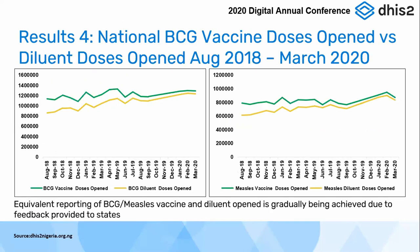The next result shows the vaccines and diluent. This is BCG vaccines and diluent: BCG vaccine, as well as measles, is given alongside the diluent. We expect that if you open a vial of BCG vaccine, you should also open an equivalent number of the diluent. We noticed discrepancies between these two, which was also one of the indicators we were monitoring. We're not where we expect to be — both lines should be touching each other. But we have noticed over time that the gaps and discrepancies between vaccines and doses are gradually closing up, and with regular support at sub-national level, we'll get to where we expect to be.